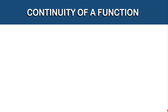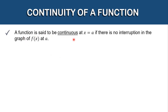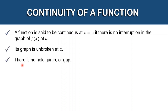For this video, we're going to be discussing the continuity of a function. A function is said to be continuous at x is equal to a if there is no interruption in the graph of the function f of x at a. Its graph is unbroken at a, and there should be no hole, jump, or gap in our graph.